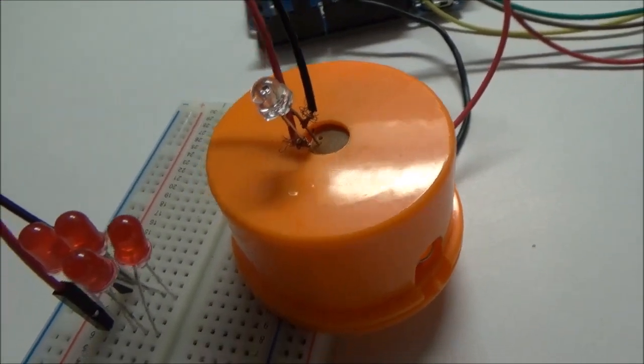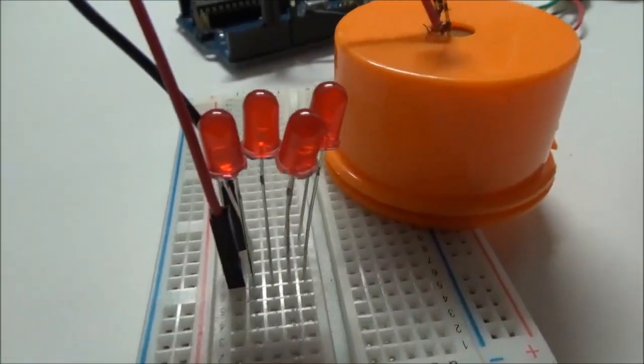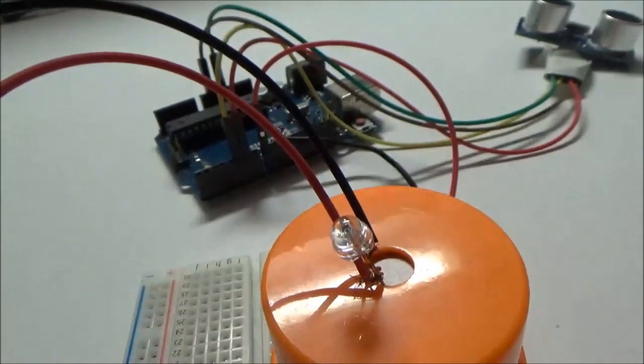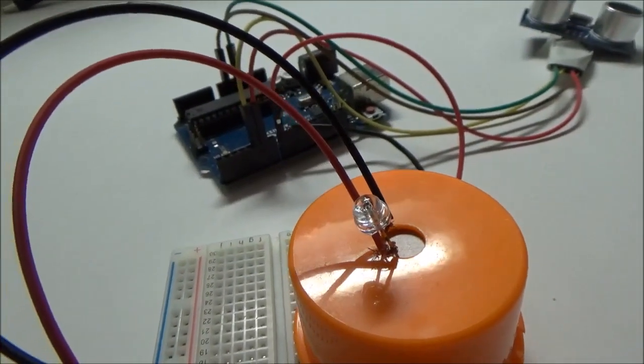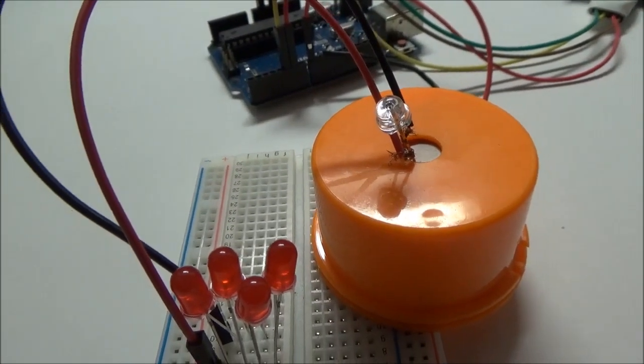I've also connected these four LEDs in parallel to the first LED since I thought they won't be able to provide that much light that will be able to illuminate the pumpkin from the inside.